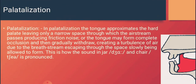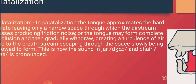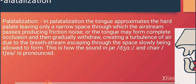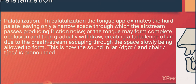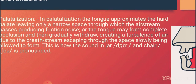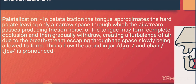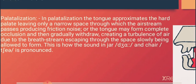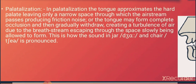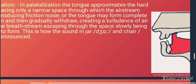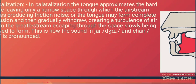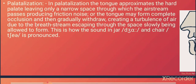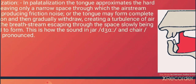Palatalization is a process in which the tongue blade comes closer to the hard palate, leaving only a narrow space through which the air stream passes, producing frictional noise. The tongue may form a complete closure and then gradually release it, creating turbulence of air due to the breath stream escaping slowly through the space. This is how the sounds in 'ja' and 'chair' are produced. You can see here the hard palate.